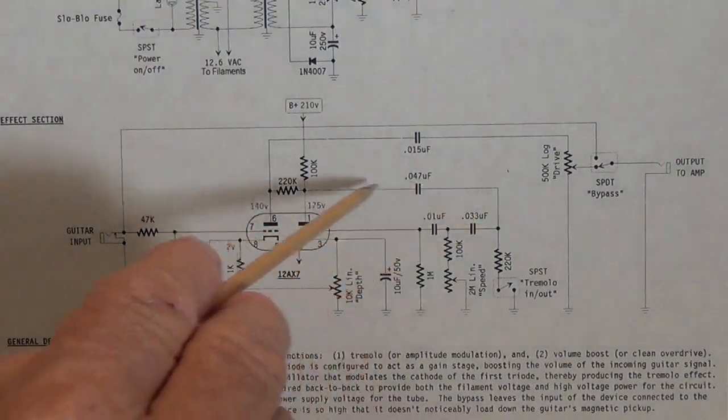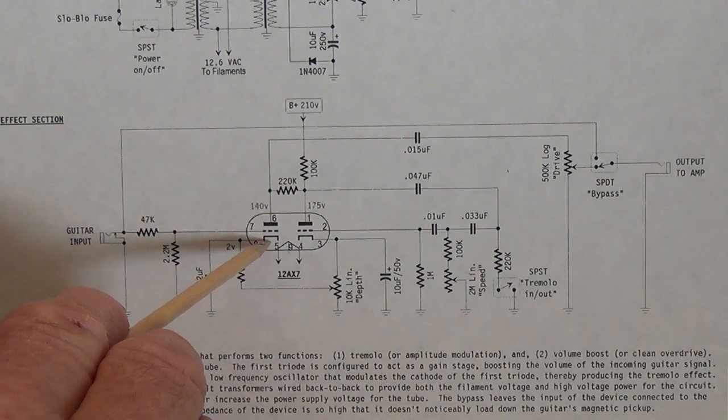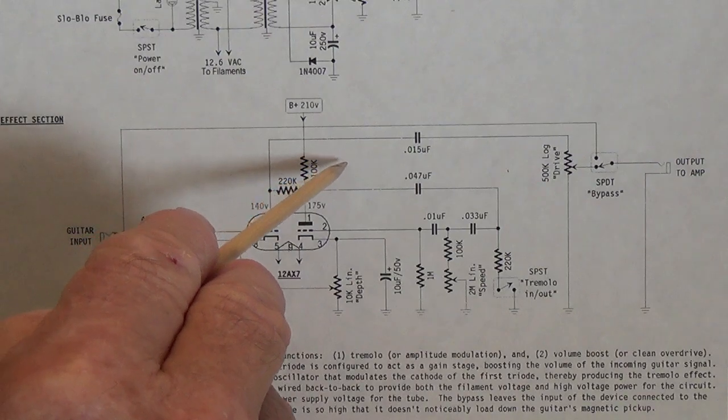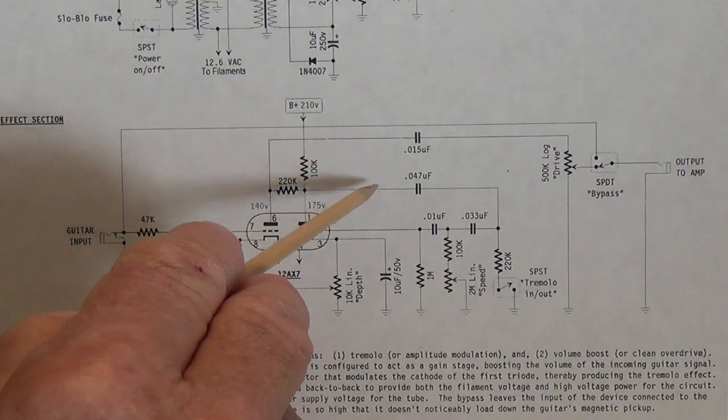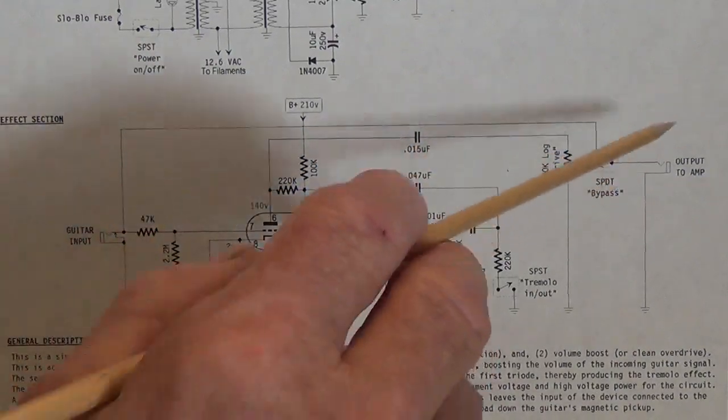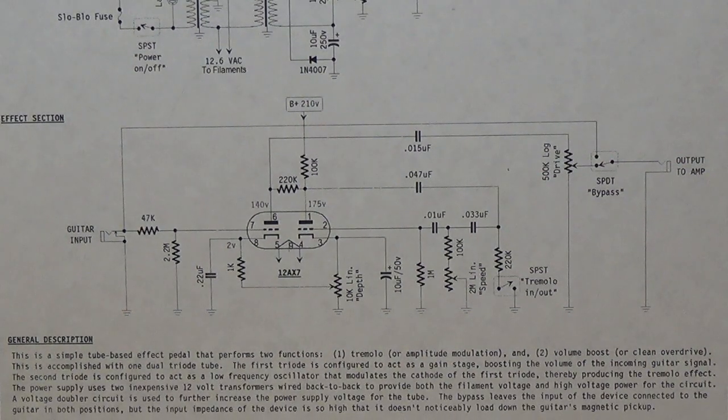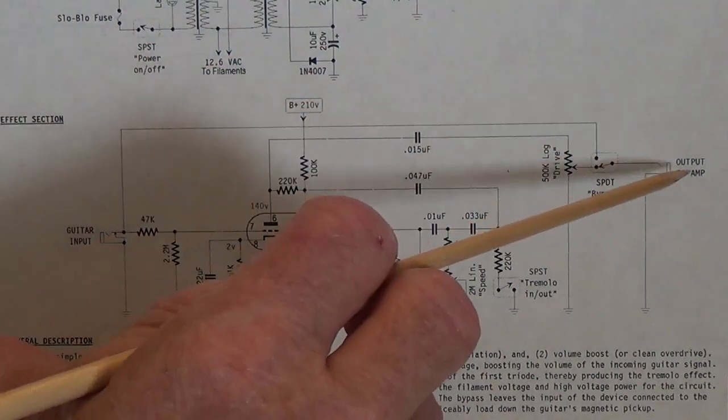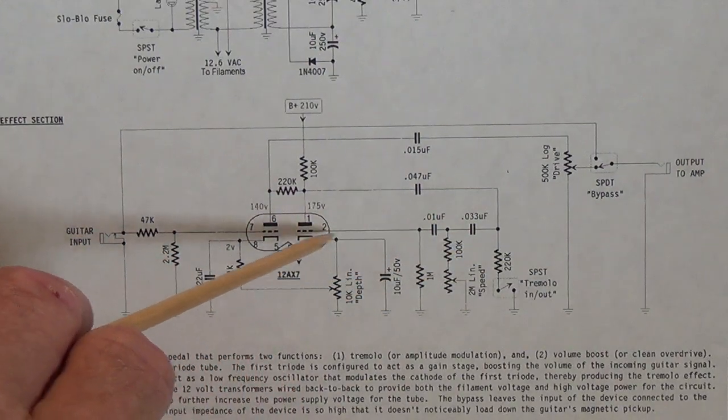When the tremolo is engaged it will modulate the output from our boost triode and it will be very much like you grab the volume control on your guitar and turn it up down up down up so we have the typical tremolo modulation being applied to the input signal of the amp. Now this is much earlier than virtually any tremolo signal will ever be applied in a circuit. Generally it's applied to either the output tubes or to the phase inverter but in this case we're applying it to the input of the amplifier so this is capable of producing a really profound tremolo effect.